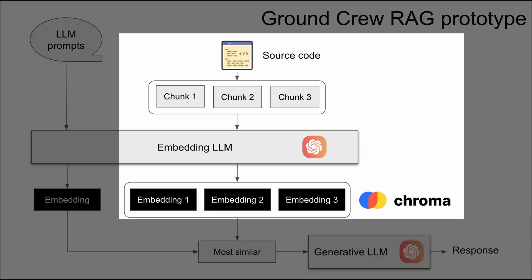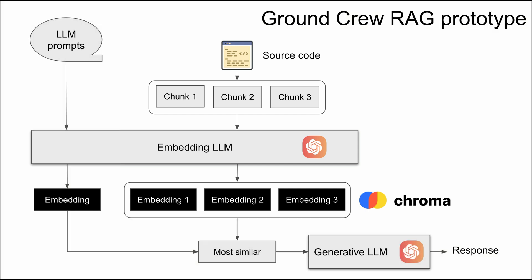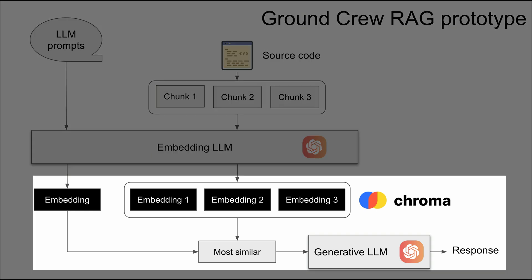Here's how we followed the three steps. Step one, prepare the data: we used our code to create embeddings and stored them in ChromaDB, an open-source embedding database. Step two, process the data with prompts: we built a simple LLM RAG application that passes the relevant embeddings and a question to the LLM for processing.